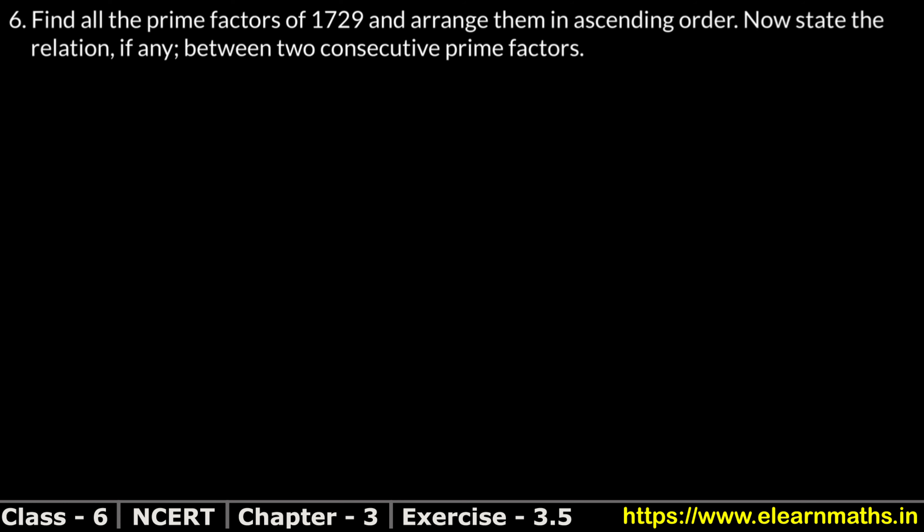Let's find the prime factors of 1729. Checking divisibility by 7: 7 times 7 is 49, and continuing the division gives us 7 goes into 1729. Yes, 7 will come out as a factor.